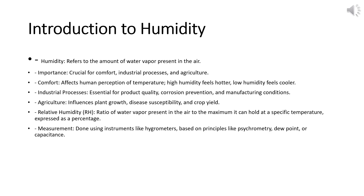Now we will look at relative humidity. Relative humidity is the ratio of the amount of water vapor present in the air to the maximum amount of water vapor the air can hold at a specific temperature, expressed as a percentage. RH is measured using instruments such as a hygrometer, which can be based on various principles including psychrometry, dew point, or capacitance. Understanding and controlling RH is essential for maintaining comfortable and healthy indoor environments, optimizing industrial processes, and ensuring agricultural productivity.